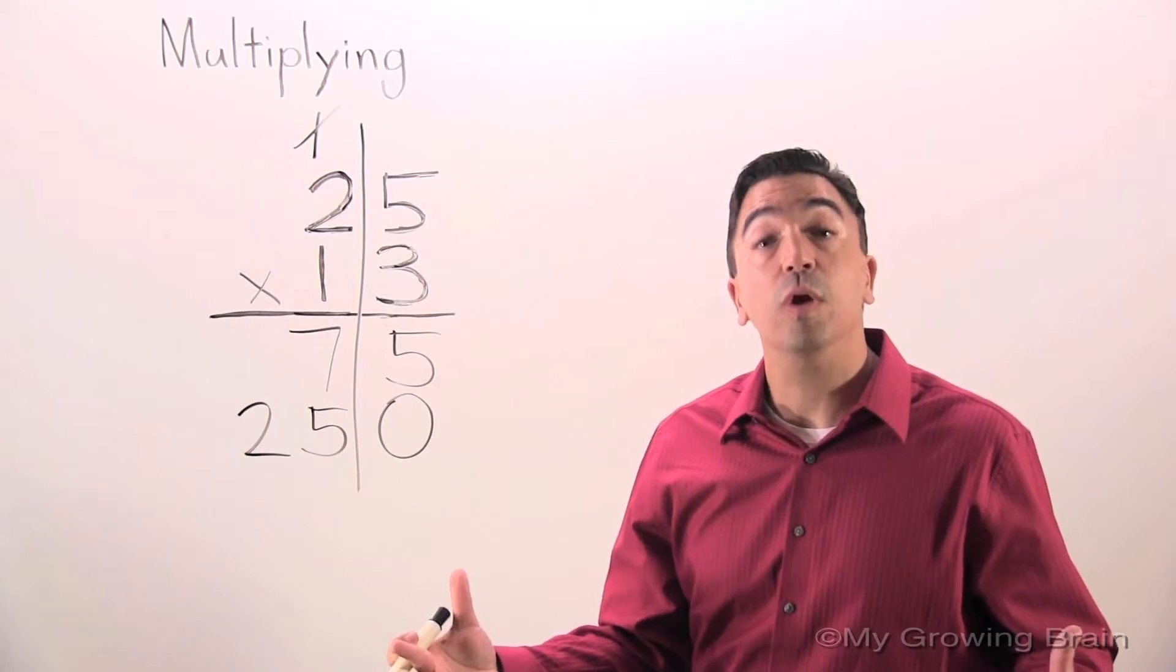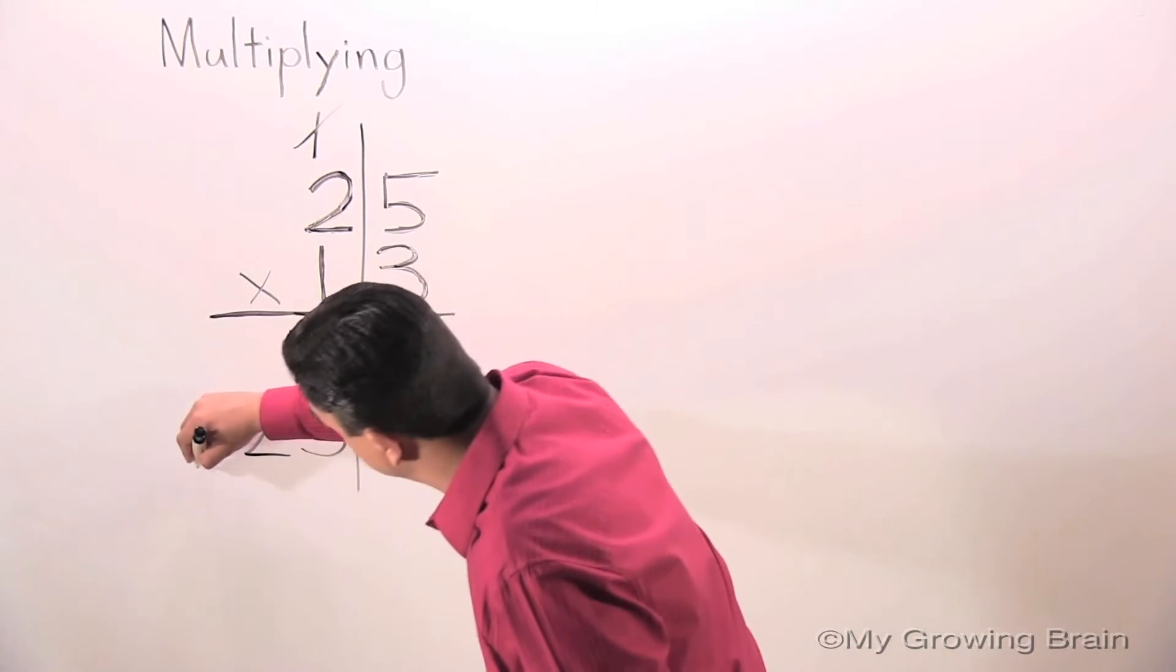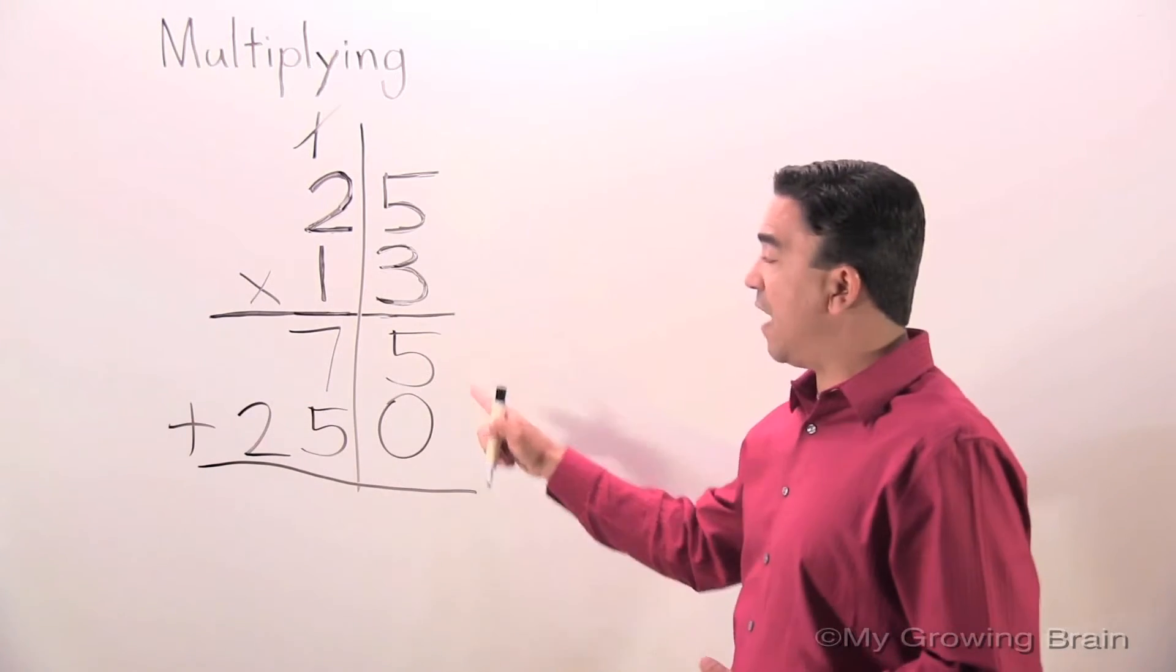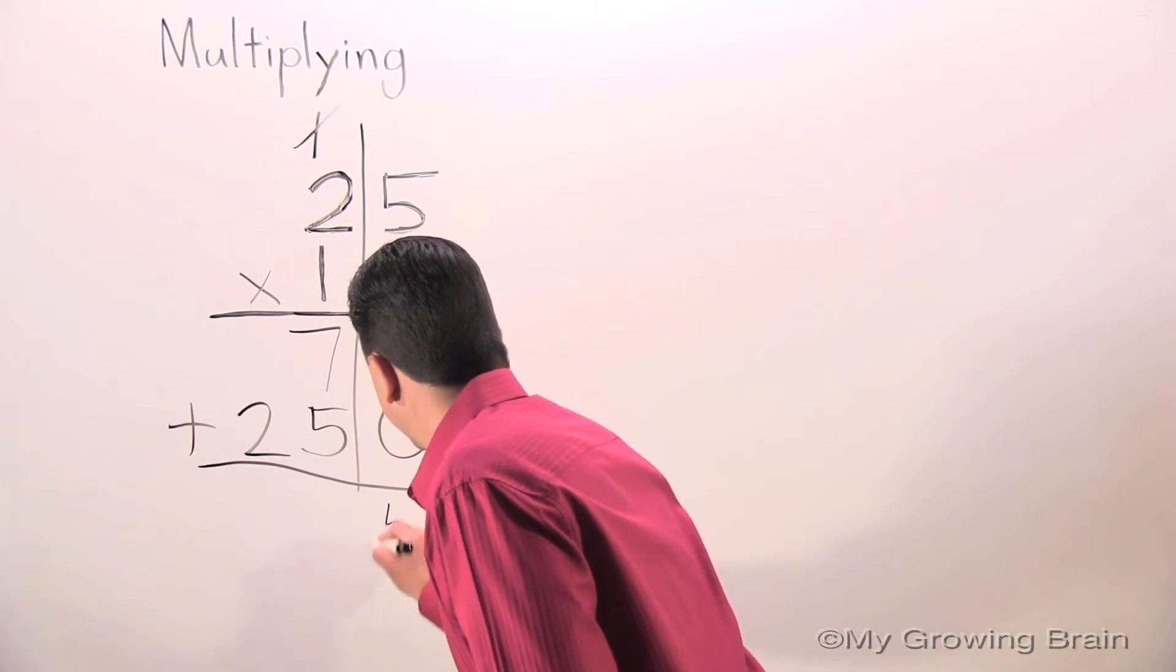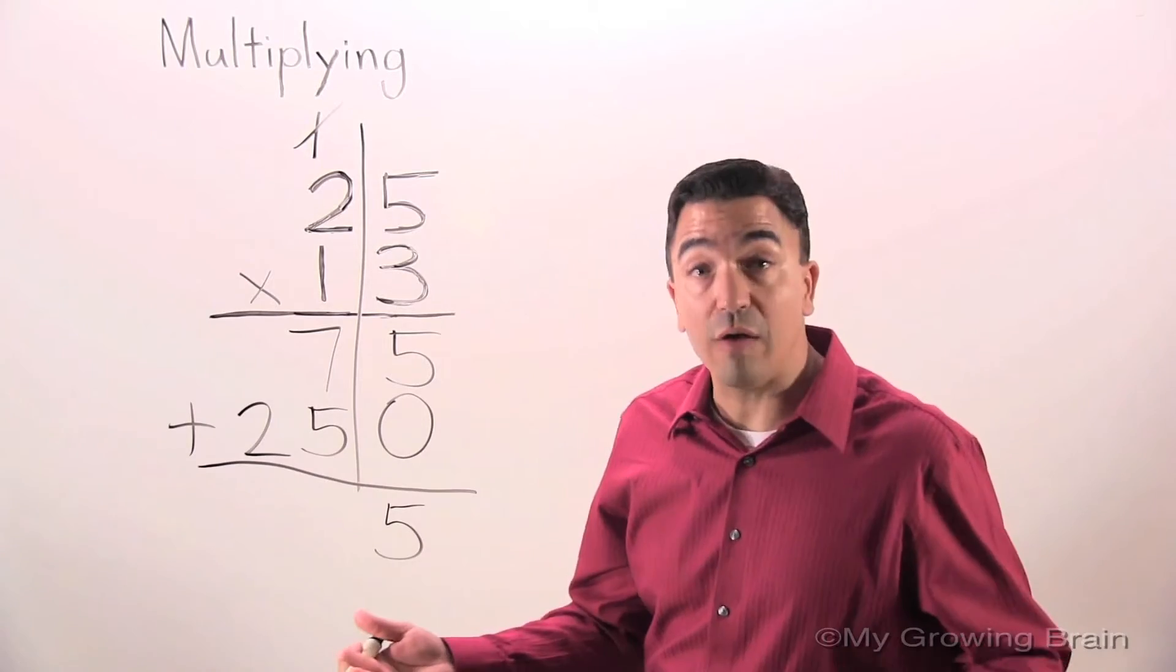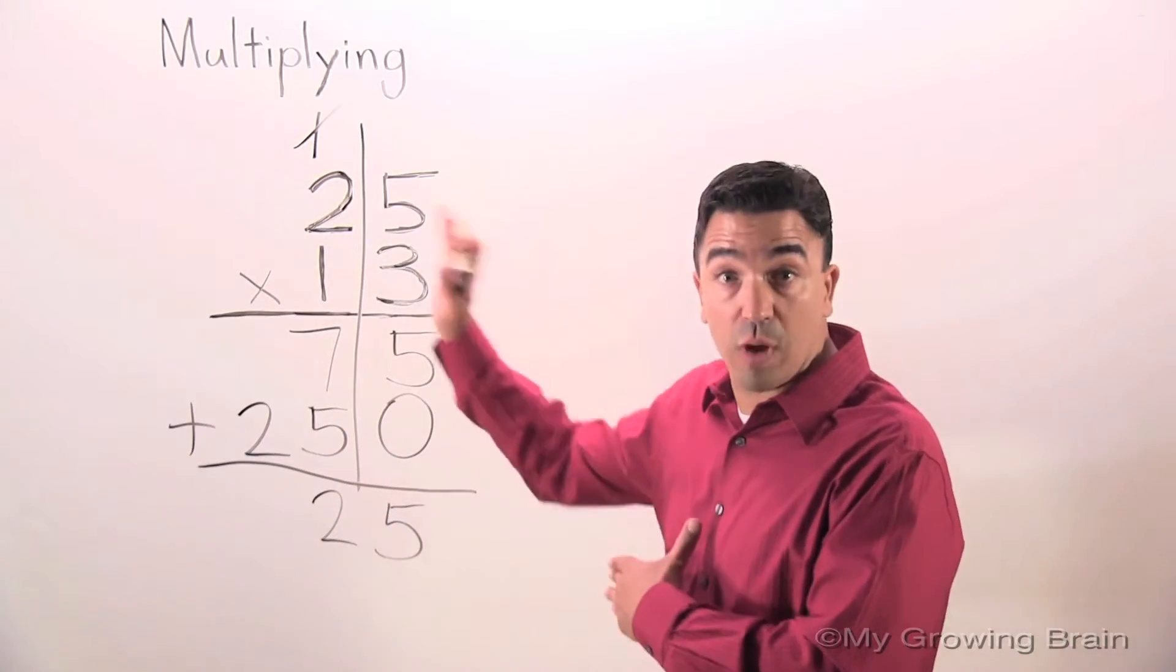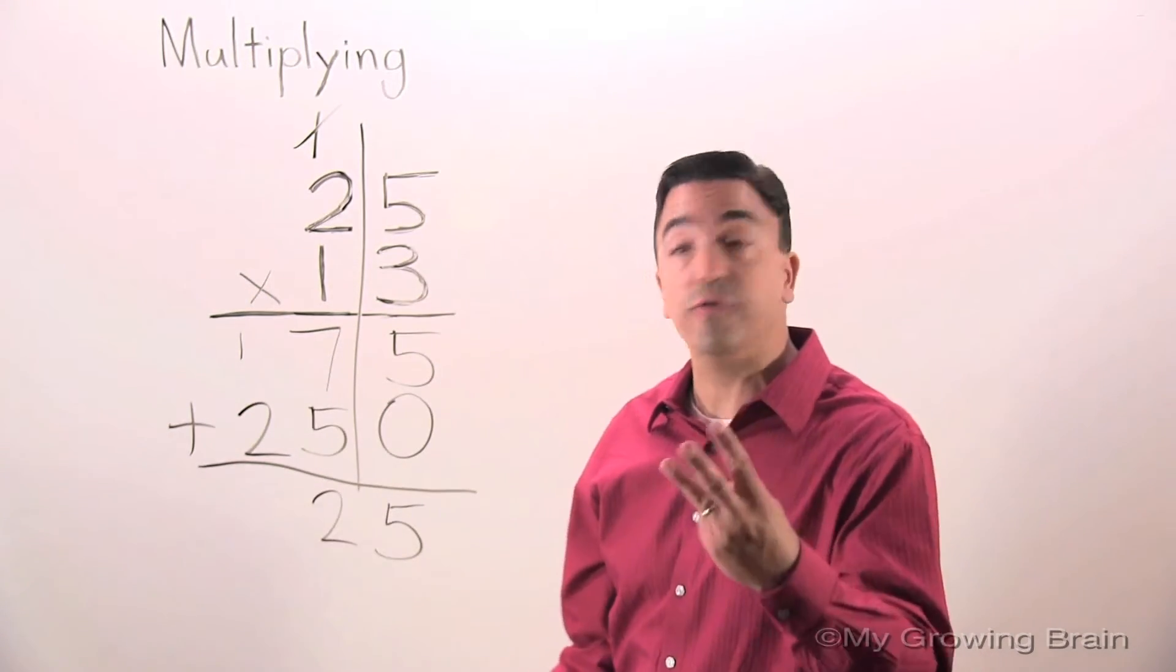Now we're going to add 75 plus 250. Five plus zero is five. Seven plus five, 12. I'm going to regroup my one. Two plus one is three.